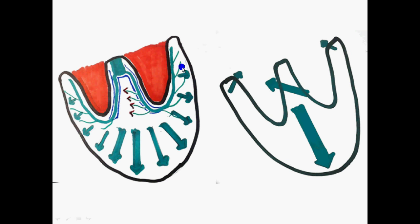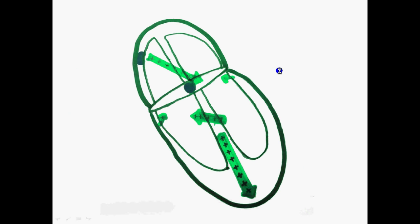Coming to the major portion of the ventricle, adding all the vectors here gives a large vector directed to the left and bottom. At the base of the ventricle, depolarization is in the upward direction, and because the area is small, the vectors here are small. Now take a moment to look at all the vectors — the atrial vector, the septal vector, the major ventricular vector, and the base vectors.